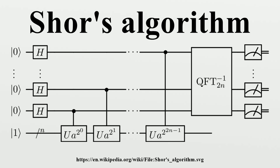Shor's algorithm consists of two parts: a reduction, which can be done on a classical computer, of the factoring problem to the problem of order finding; and a quantum algorithm to solve the order finding problem.